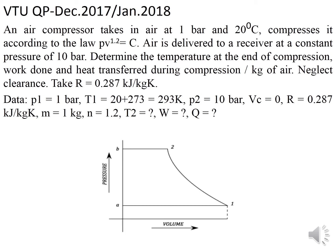Air is delivered to a receiver at a constant pressure of 10 bar. Determine: the temperature at the end of compression, work done, and heat transferred during compression per kg of air. Clearance is neglected and R = 0.287 kJ/kg·K. So: p1 = 1 bar, T1 = 293 K, p2 = 10 bar, m = 1 kg, n = 1.2.